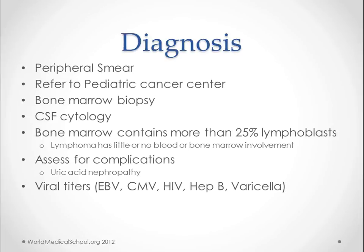Lymphoma is essentially the same thing — we have proliferation of lymphocytes, but they are just in a mass somewhere and not much involved in the blood or bone marrow. Patients will also be screened for other complications. If you have a lot of these cells dying, then you get uric acid nephropathy and other complications of uric acid in the blood.